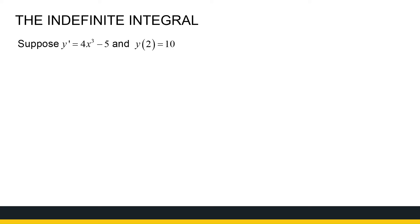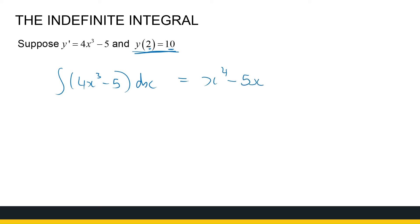Just one more thing in this section. We've looked at the general plus c, but there could be cases where you're given enough information to actually calculate the value of c. Here we're told the derivative of a function is 4x³ minus 5, and when x is 2, y is 10. That is enough information to find the function y. The integral of 4x³ minus 5 dx gives x⁴ minus 5x, so y = x⁴ minus 5x plus c. We use the additional information to find c: when y is 10, x is 2.